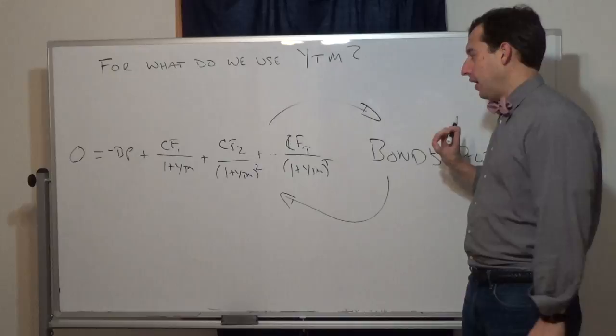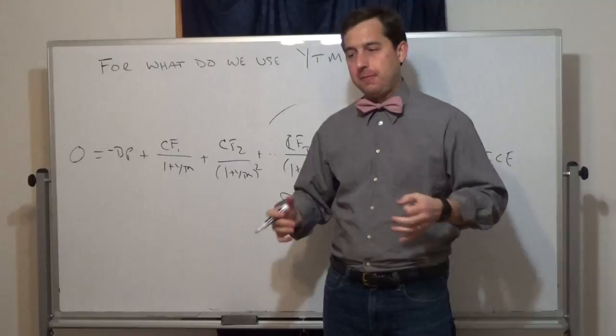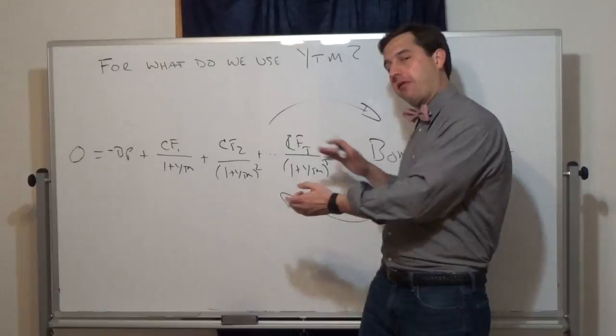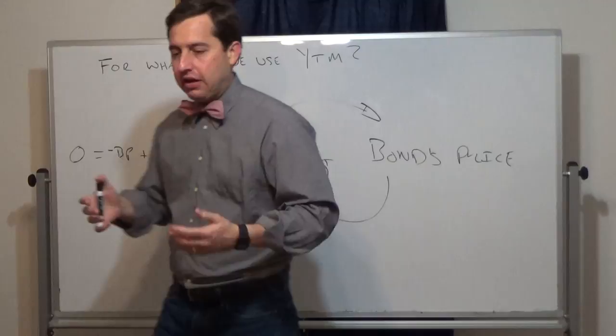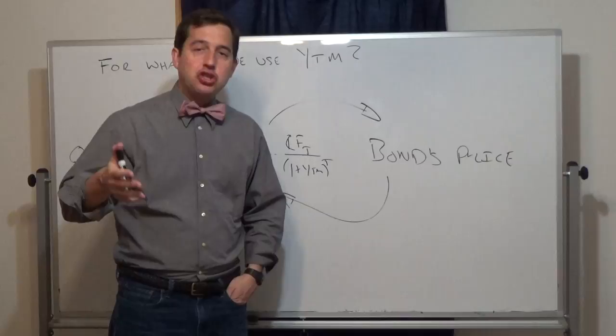What we use yield to maturity for is translating a given yield to a given bond's price. If you ask me what a bond's price is and I tell you the price, it's not that useful. Instead, I quote the yield to maturity, knowing that you can translate from yield to maturity to the price.